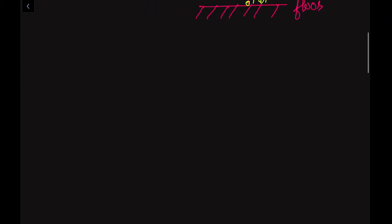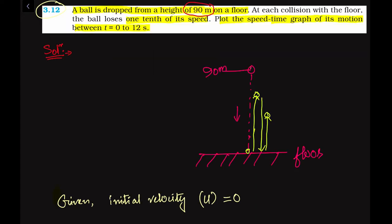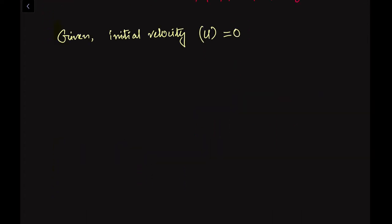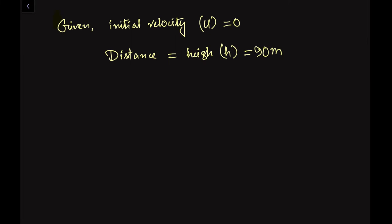Let us write down the given parameters. Initial velocity, denoted by u, is equal to 0, because the ball is dropped from height and is at rest initially. It will gain motion due to gravitational pull. The distance of travel equals the height h, which is 90 meters. We assume acceleration due to gravity g equals 9.8 meters per second squared. You have to memorize this value as it will not always be given in the question.